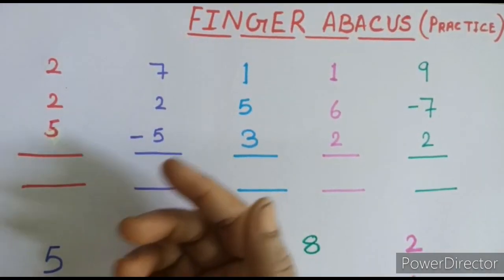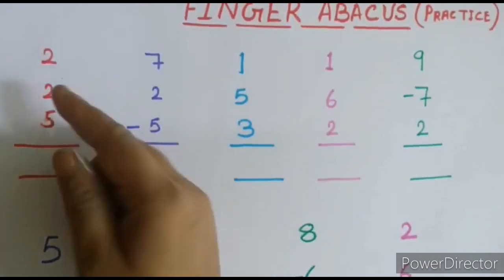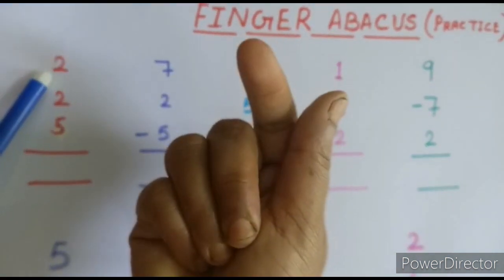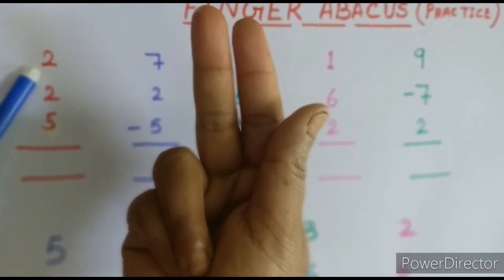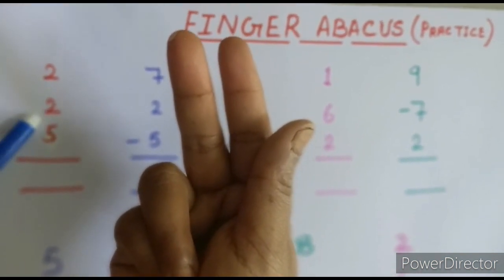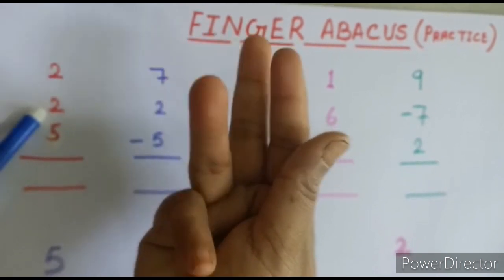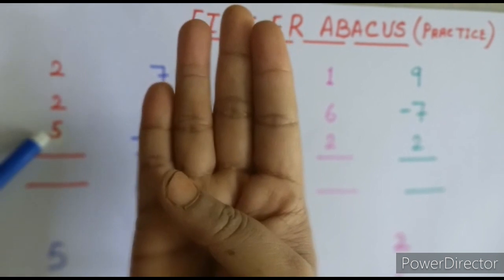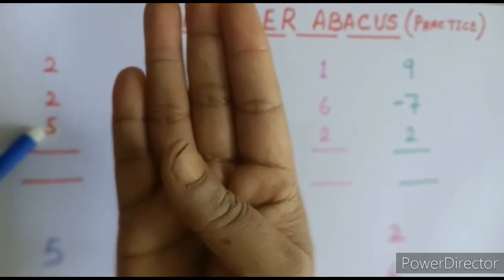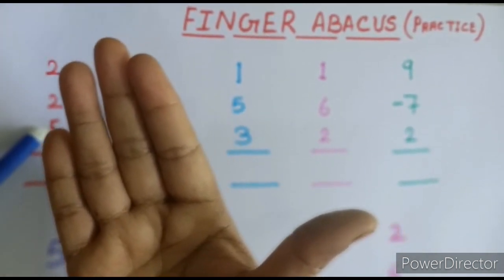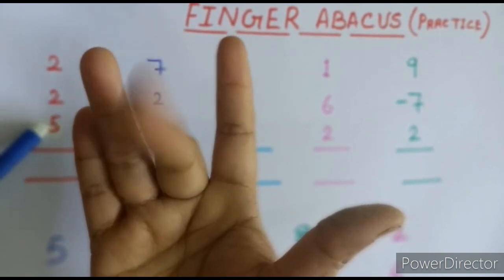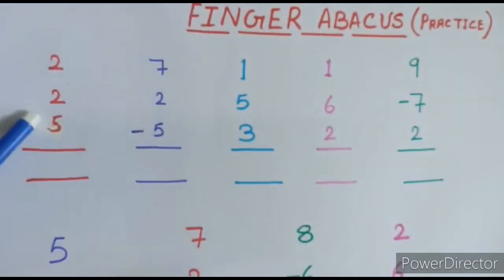Our first example: the first number is plus 2 — so open 2 fingers, 1, 2. Then plus 5 — just open the thumb, that is plus 5, so counting: 5, 6, 7, 8, 9. Our answer is 9.